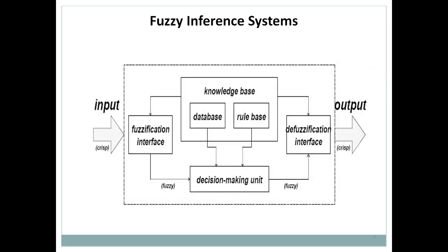Now let's discuss the block architecture of the fuzzy inference system. We will understand it with the help of an example, because examples are the best way to understand a concept. Let's take the example of a washing machine, since fuzzy logic is mostly used in embedded machines. In a washing machine, you provide cloth as input and get cloth as output — dirty cloth goes in and clean cloth comes out. The word 'dirty' is a fuzzy word because you cannot define dirty directly.